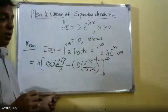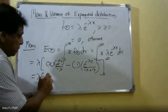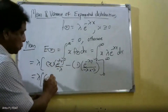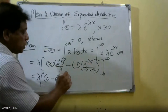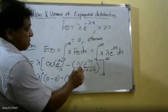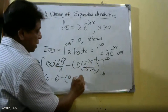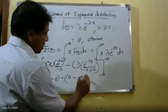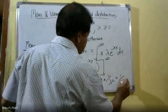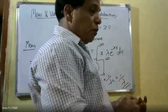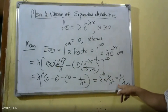We now apply the limits. When we apply the upper limit (infinity), e^(−∞) = 0, so the first part is 0 and the second part is also 0. When we apply the lower limit (0), the first part is 0, and the second part gives minus 1/λ². Removing the brackets: λ × (1/λ²) = 1/λ. Therefore, the mean of the exponential distribution is 1/λ.